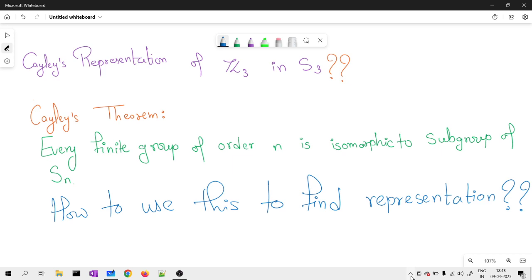Let me first answer the second question: what does Cayley's representation mean? As I said, every group of order n is isomorphic to a subgroup of Sn. Cayley's representation means you have to find out that subgroup of Sn which is isomorphic to that group of order n.